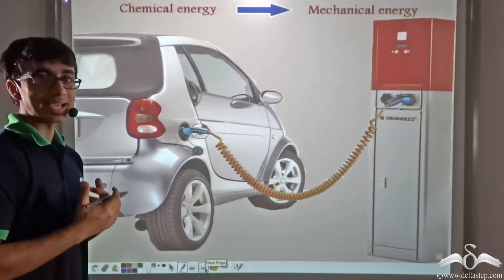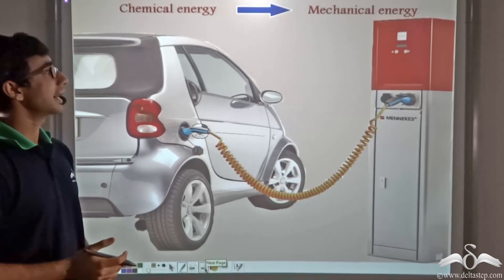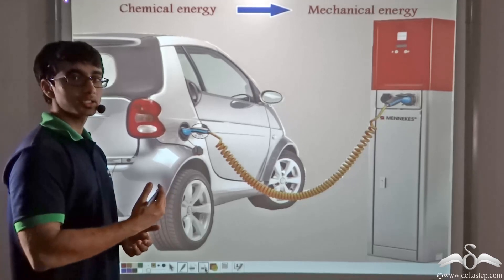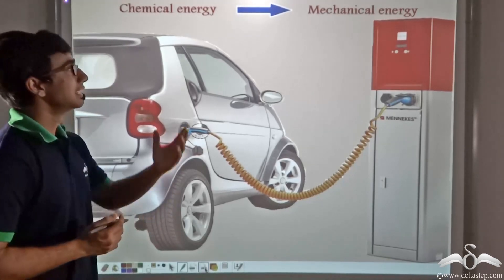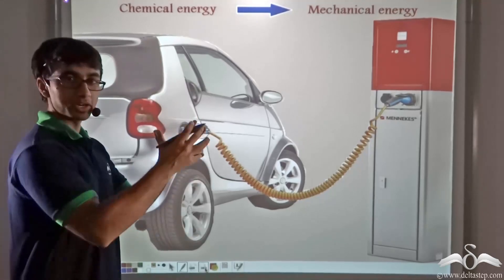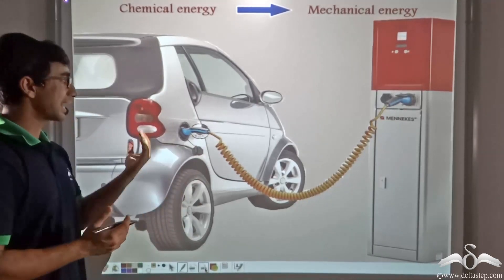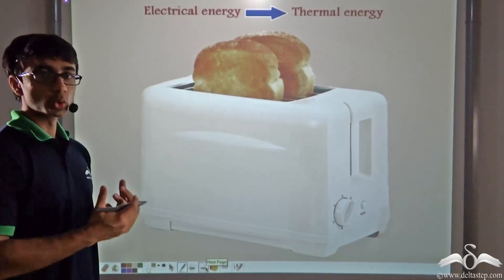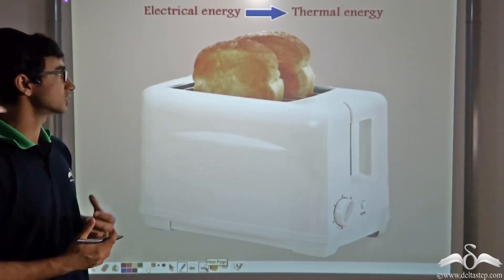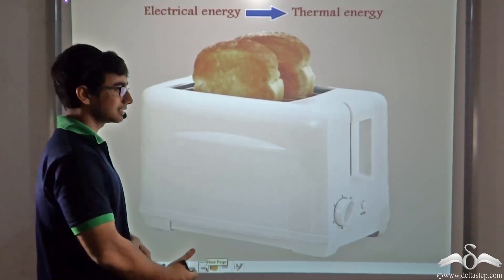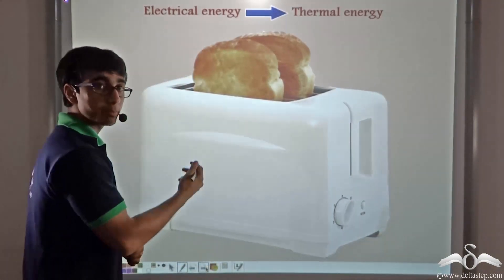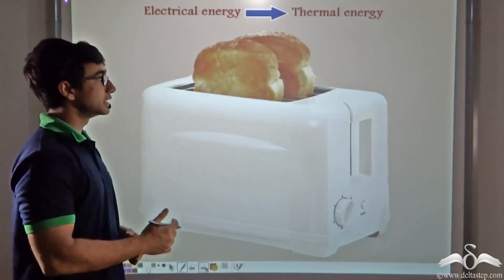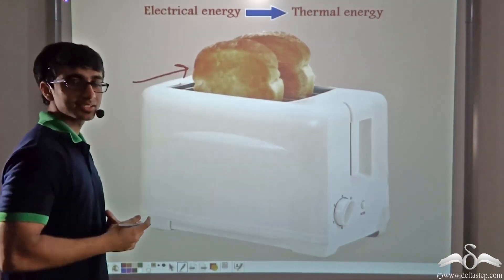So as we have seen, the total energy in any system remains constant. However, energy is changed from one form to another. So when your dad takes your car to the petrol pump for refueling, the chemical energy that is present in the petrol — a fossil fuel — is converted into mechanical energy when it helps the car to move. Similarly, when you are toasting bread at your home using a toaster, the electrical energy which we are plugging into the toaster is converted into thermal energy, which is being used to toast the bread.